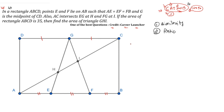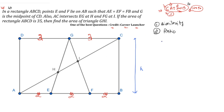We merge these ratios by taking the LCM, which gives us 6. So we can assign values: this segment is 3, this one is 3, this one is 2, and this one is 2. We are finding a ratio, so for convenience we use these values with the theorem for a triangle.